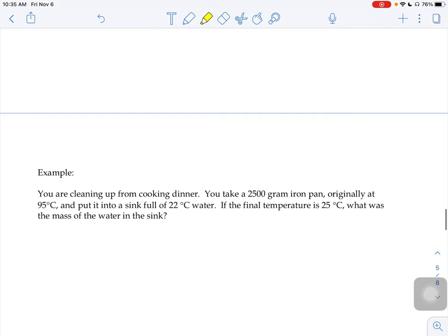So let's try one of these guys. So if we're cleaning up from cooking dinner, we take a 2,500 gram iron pan, originally at 95°C, and we put it into a sink full of 22 degree water. They tell us the final temperature's 25°C, and we want to know how much water must have been in the sink.